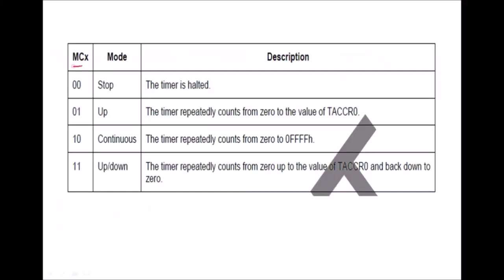The next 2 bits are the MCX bits, used to select the modes of this timer. There are 4 different modes. 00 means stop — you can stop a timer. 01 means up count mode; in this mode, the timer repeatedly counts from 0 to the value TACCR0. 10 is continuous mode; the timer repeatedly counts from 0 to 0xFFFF. 11 is up-down count; the timer repeatedly counts from 0 up to the value of TACCR0 and then back down to 0. These are the 4 modes of the timer, and as per our application, we can select any one mode.